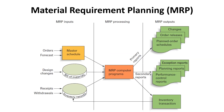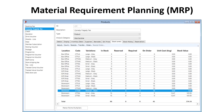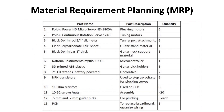There are three inputs for the MRP. The first one is the master schedule, which tells how much finished product is desired and when. The second is the inventory records file, which tells how much inventory is on hand or on order. And the last is the bill of materials, which tells the composition of a finished product.